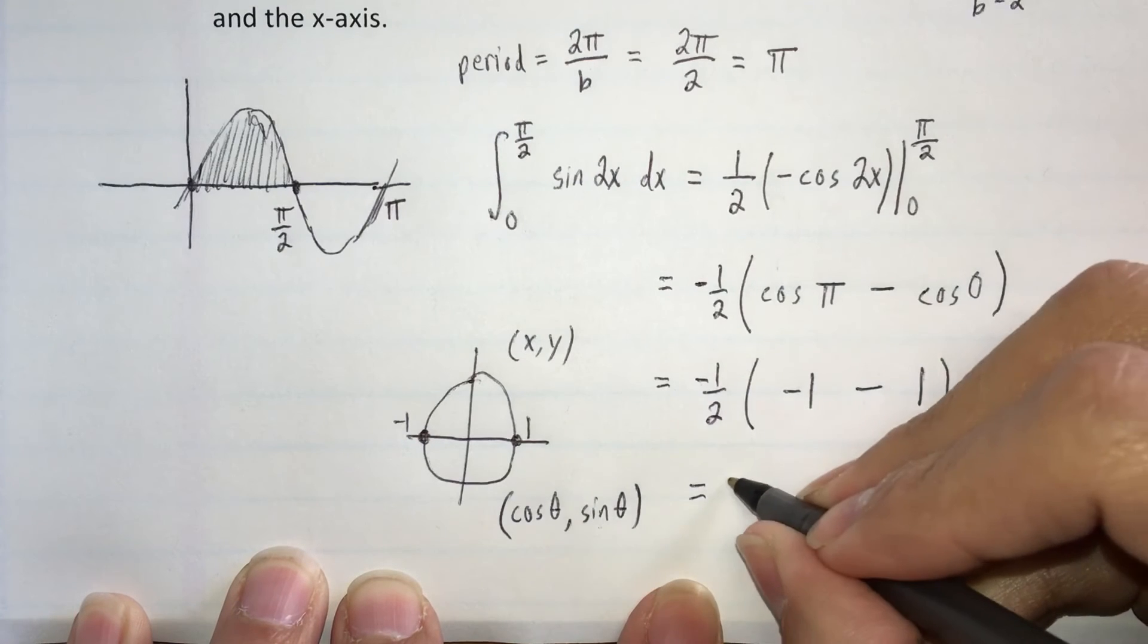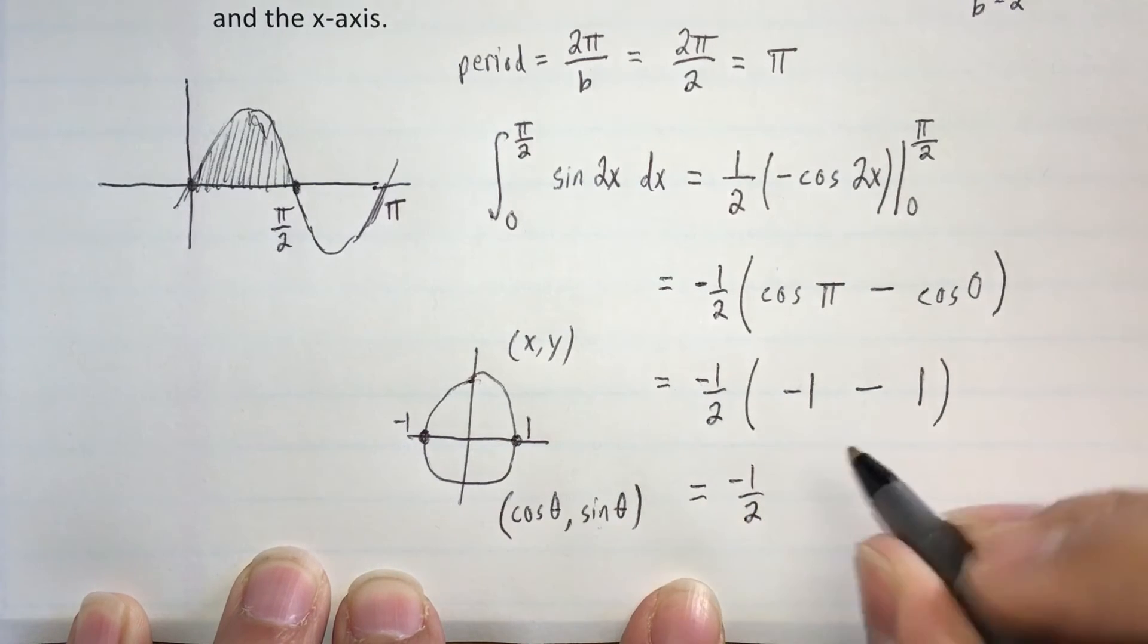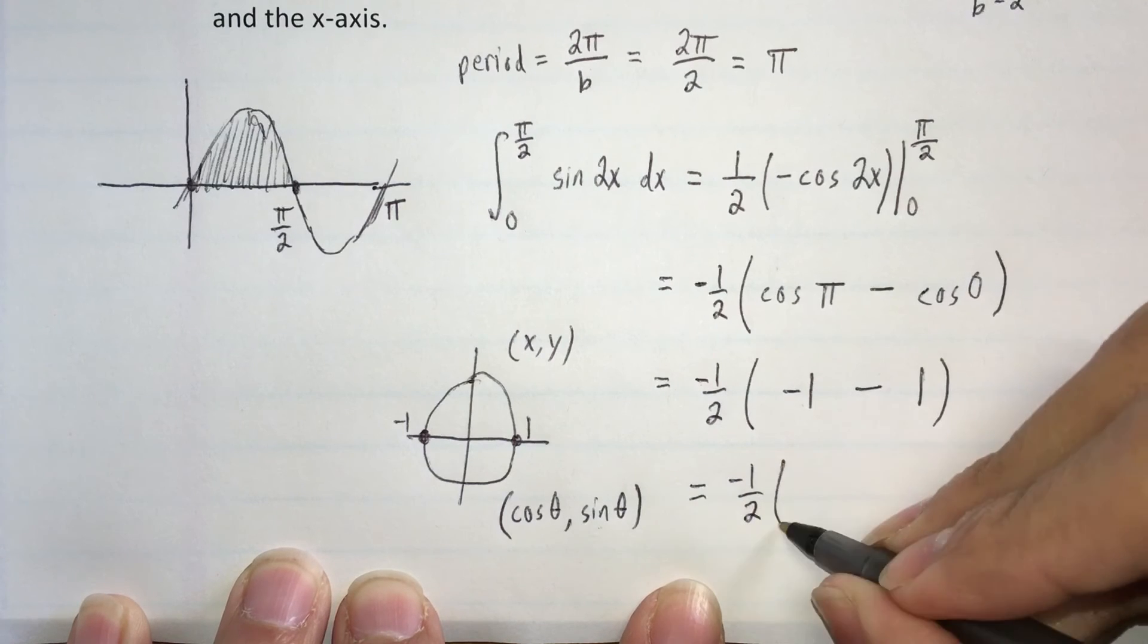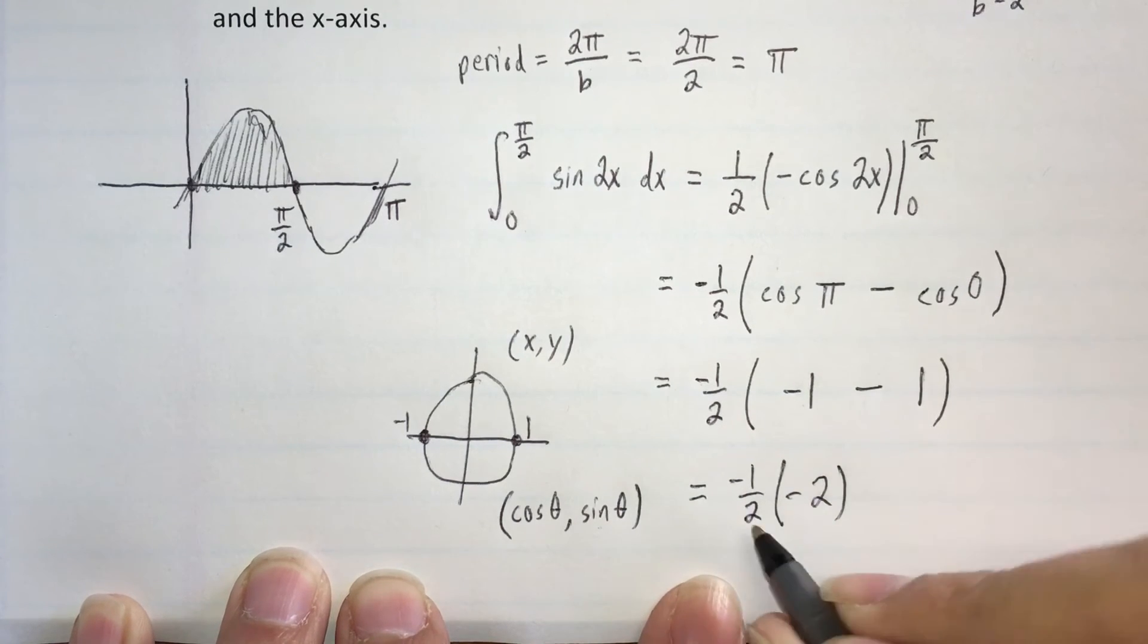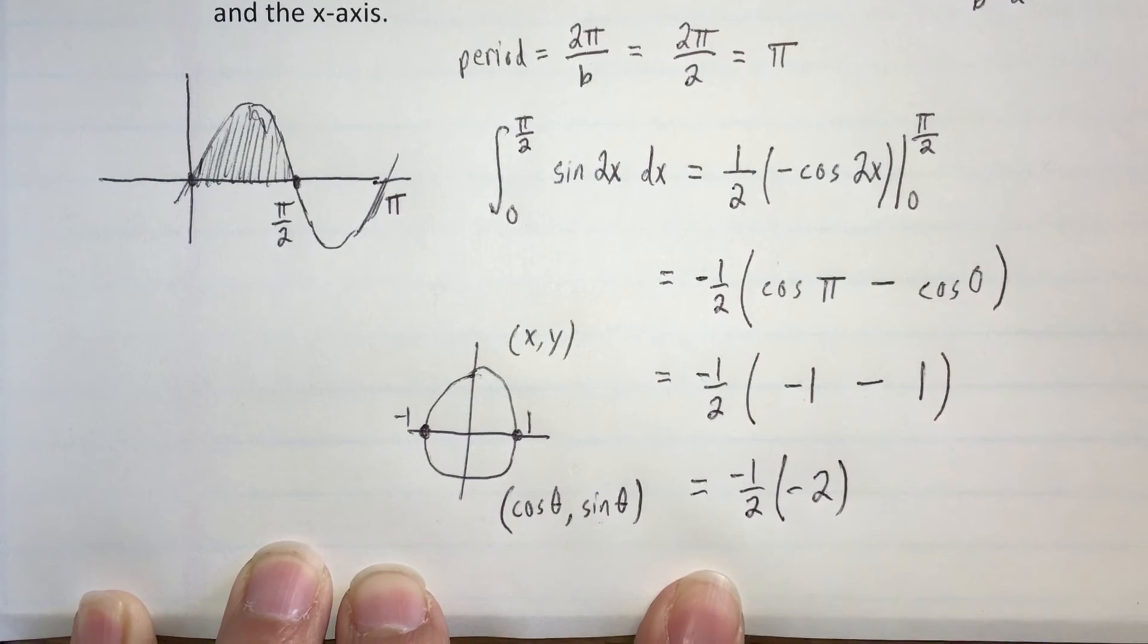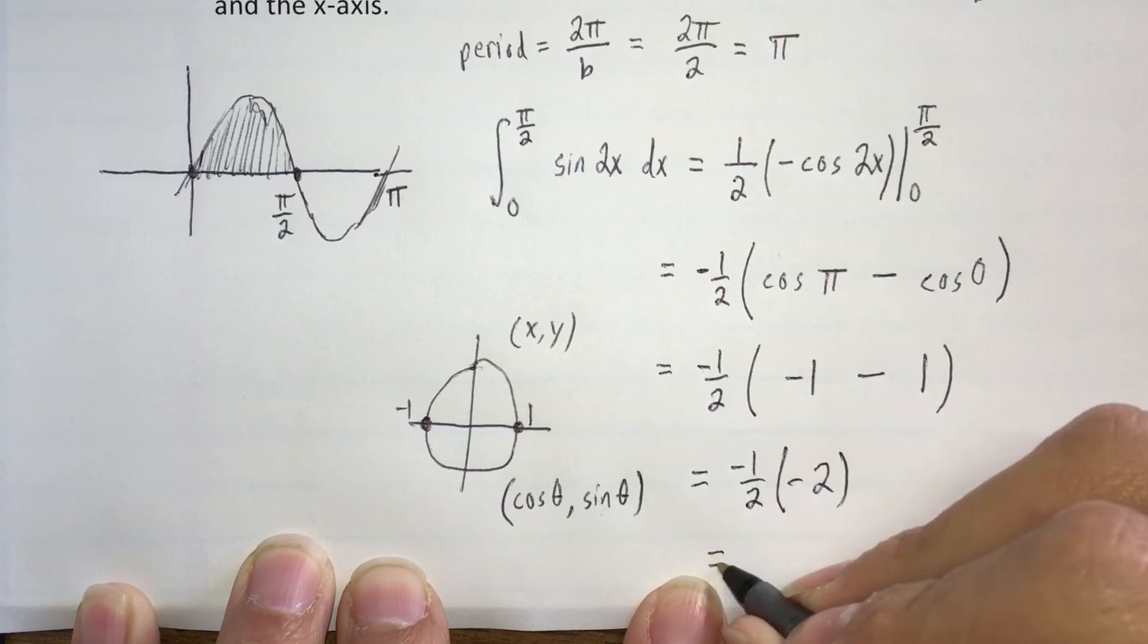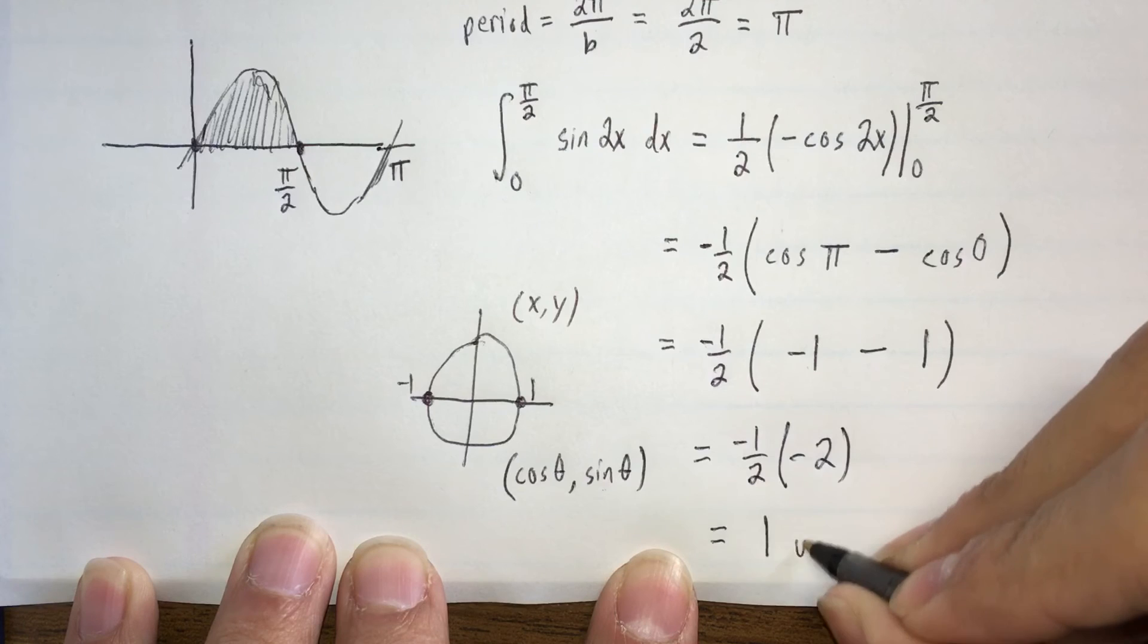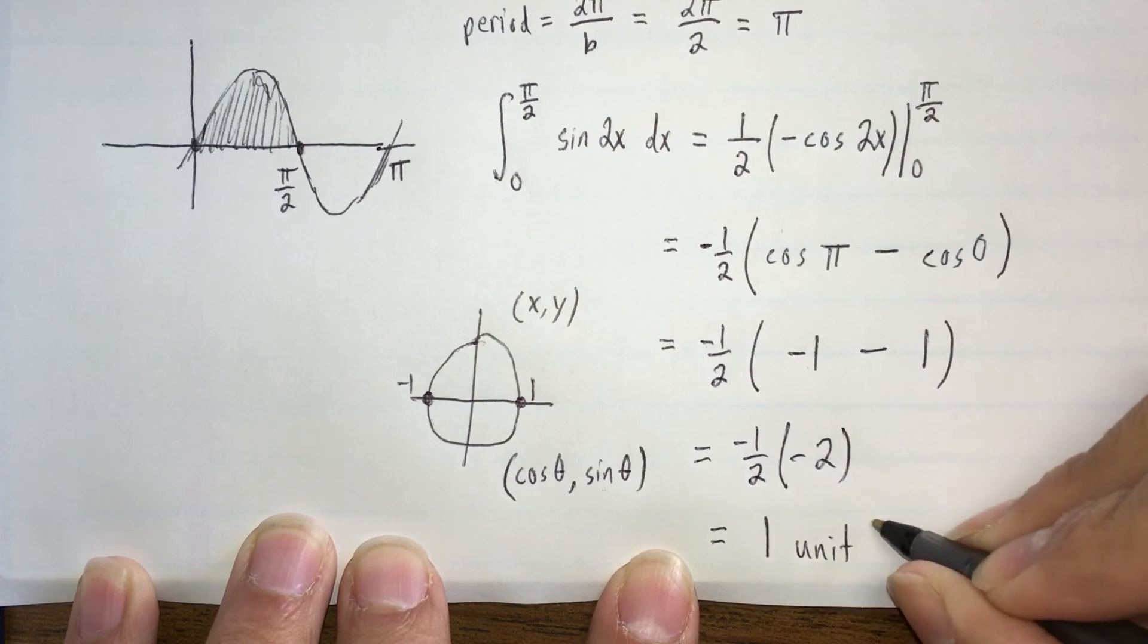And we have our negative 1/2, negative 1 minus 1 is negative 2, negative times negative gives us a positive. So our final answer is 1 unit squared.